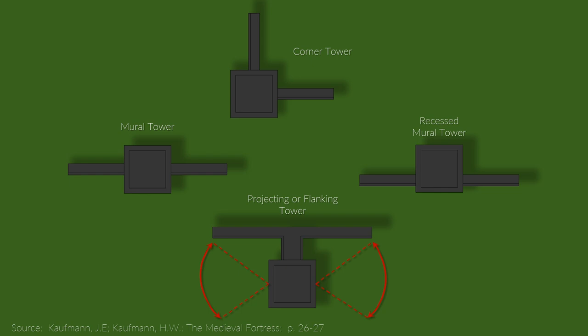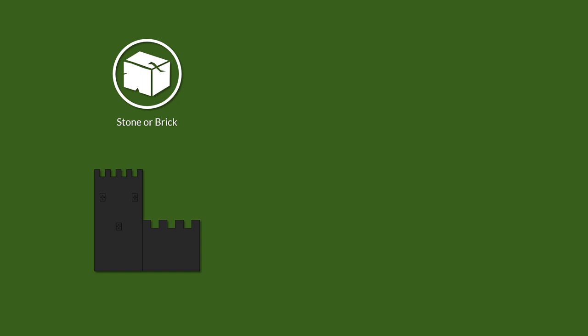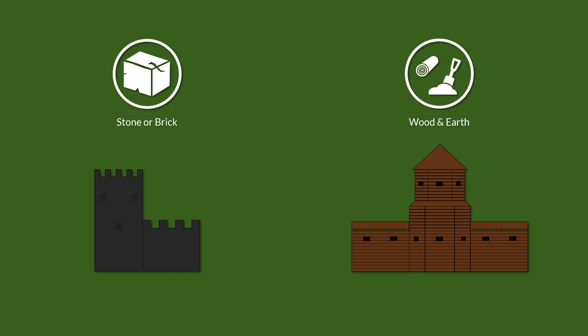Nowadays when we think of castles, we usually think about stone and sometimes brick castles. But those were rather uncommon initially in the Middle Ages. The first castles were mostly created from wood and earth, yet most of those didn't really survive, so even for Europeans they are rather unknown.